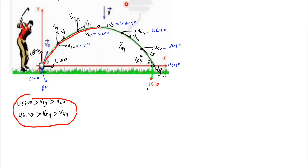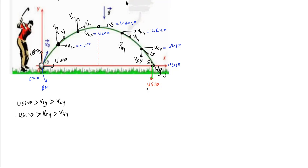From the highest point to the point of striking, the vertical component keeps on increasing and finally at the point of striking becomes equal to the initial projected velocity u sinθ. For the horizontal component: v1x = v2x = v3x = v4x = v5x = u cosθ. The reason for this is that acceleration along the x-axis is zero.